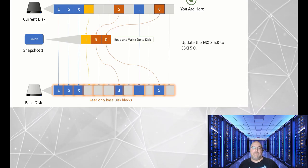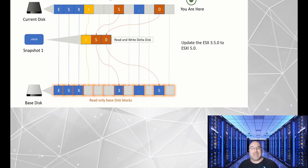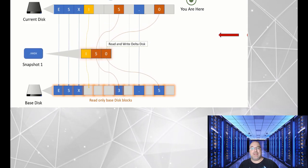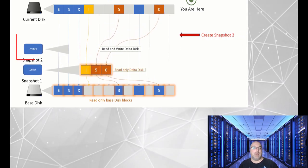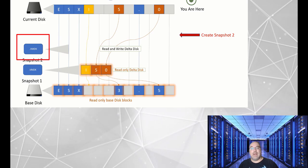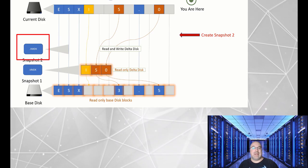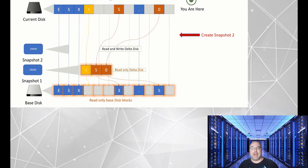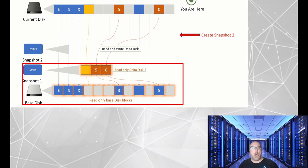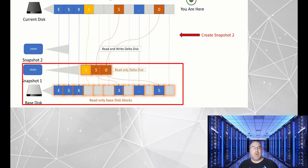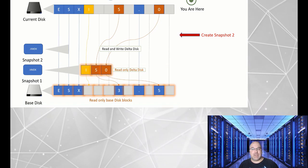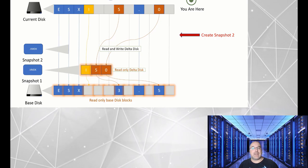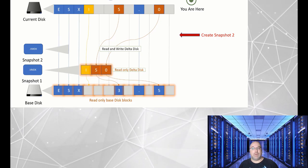Now, let's fast forward a bit. You decide to take a second snapshot, creating snapshot2.vmdk. Again, both the base disk and snapshot1.vmdk become read-only. From this moment, any changes you make are recorded in snapshot2.vmdk.